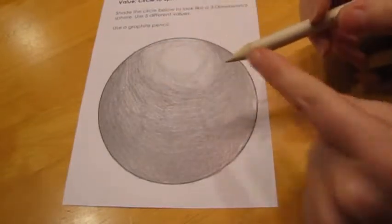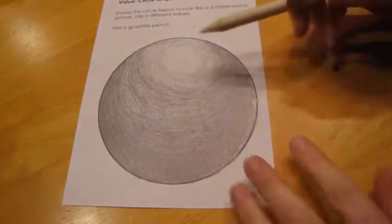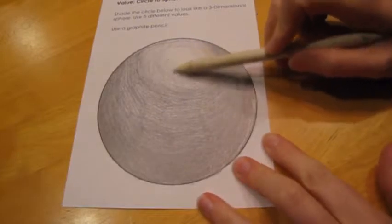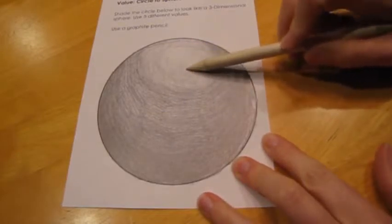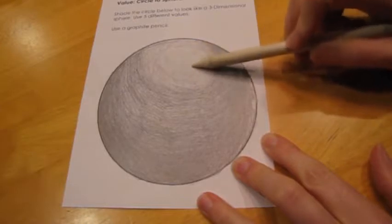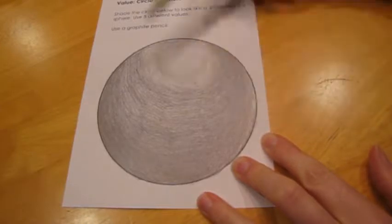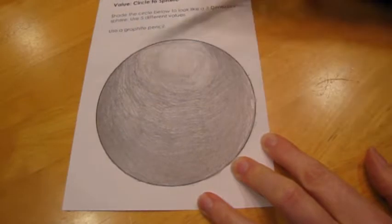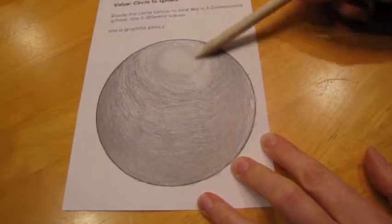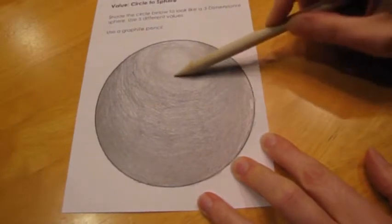Now a blending stump is just rolled up paper, but it is kind of like a pencil in that it is at a point. You are going to hold the stump about as horizontal as you can so that you are using the side of the point instead of the tip of the point.